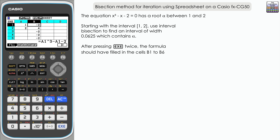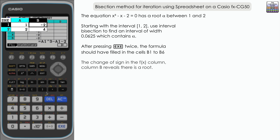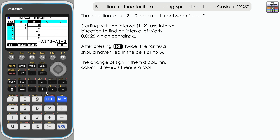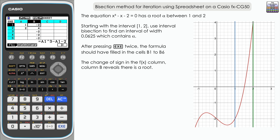Let's take a look at a couple of things we need to check. This confirms we have a root between 1 and 2 because at x equals 1 we have a negative value, negative 2, and at x equals 2 we have a positive value of 4. There's definitely a root between there because there is a change of sign between those two x values — and it's that change of sign we'll be looking for throughout the process.